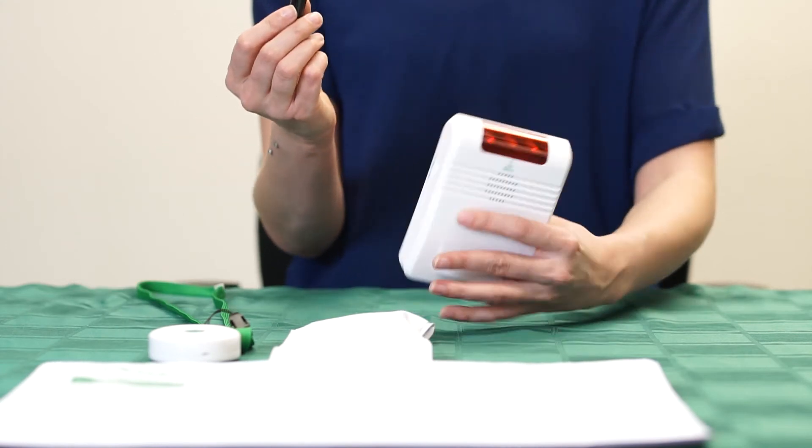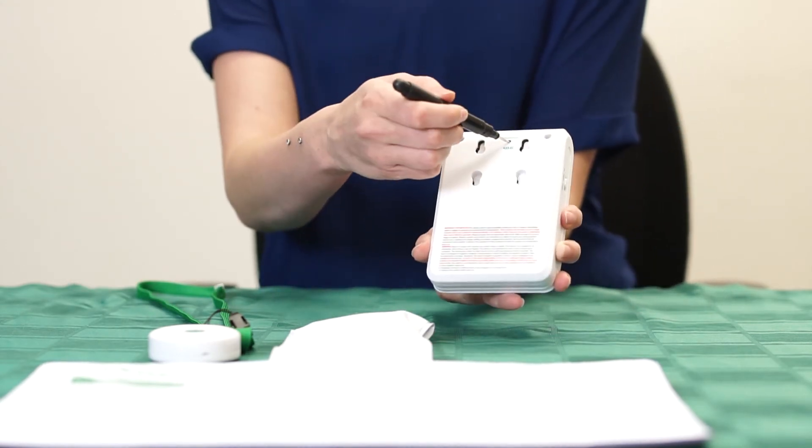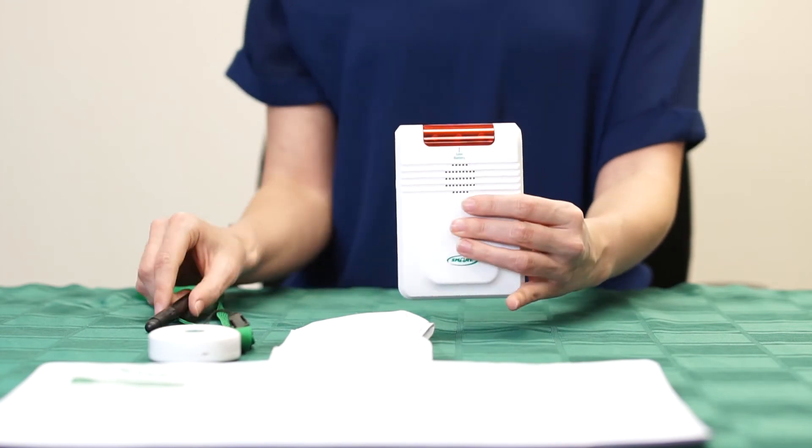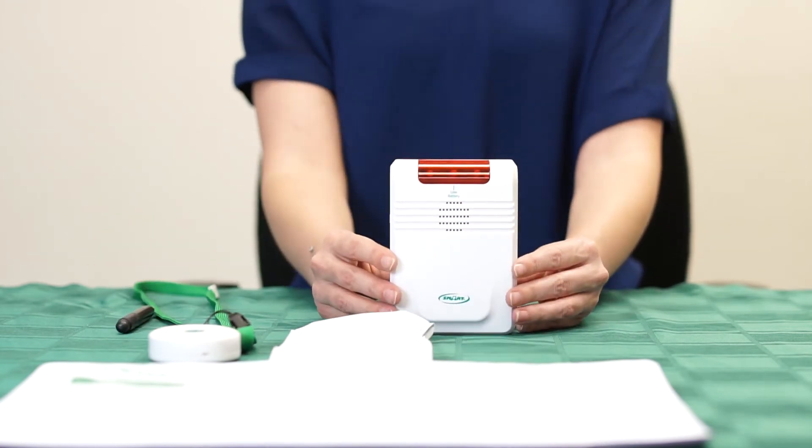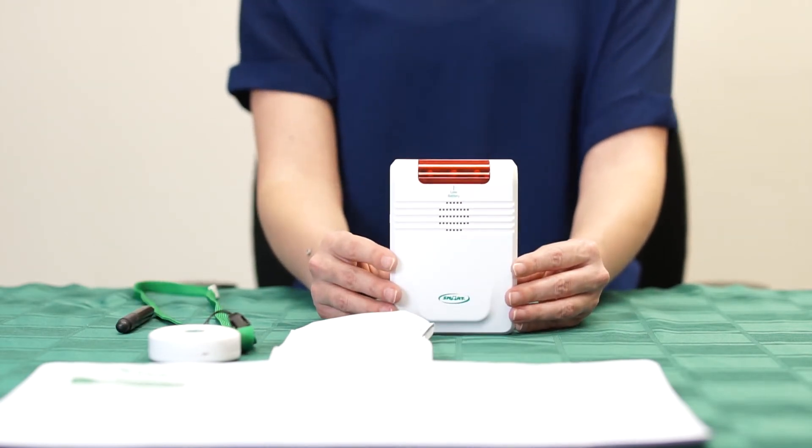After you have programmed your component or components into the monitor, you will take the tool and quickly push the program button in the back of the monitor again. You will see the lights turn off on the front of the monitor. It is important to make sure that the light on the front of the monitor did not turn off until after you press the program button again or your components may not have programmed properly.